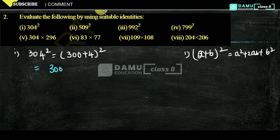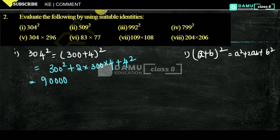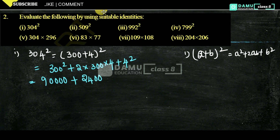So, 300² plus 2 into a, which is 300, into b, which is 4, plus 4². So 300² means 3 times 3 is 9 with 4 zeros, giving 90,000. Then plus 2 into 300 into 4: 2 times 3 is 6, times 4 is 24, with double zero, giving 2,400. Plus 4² which is 16.